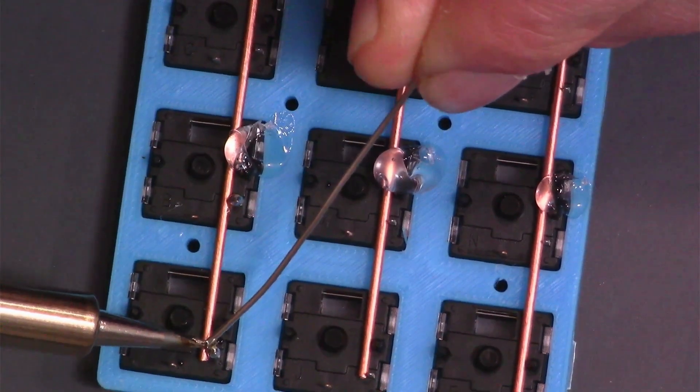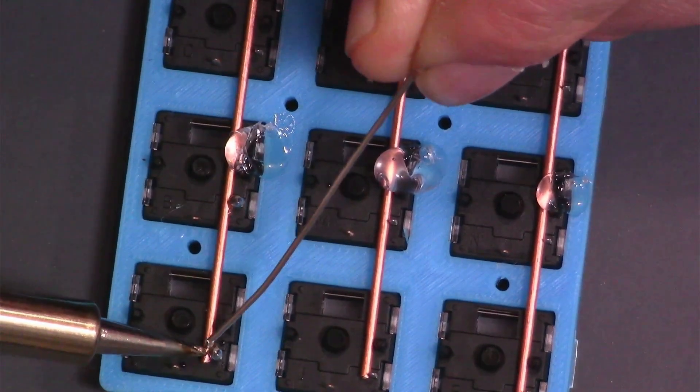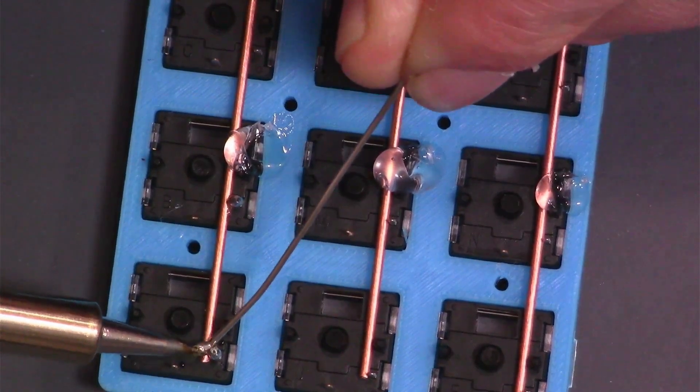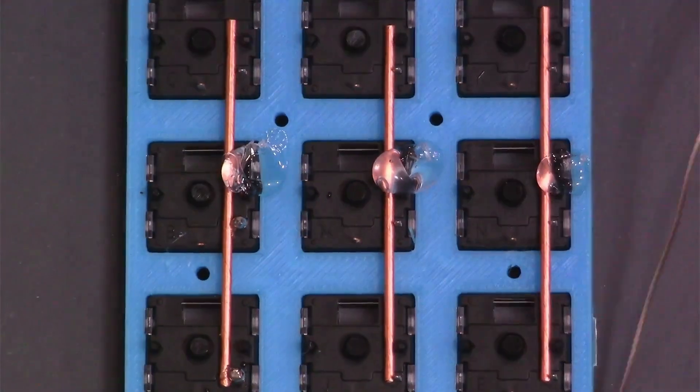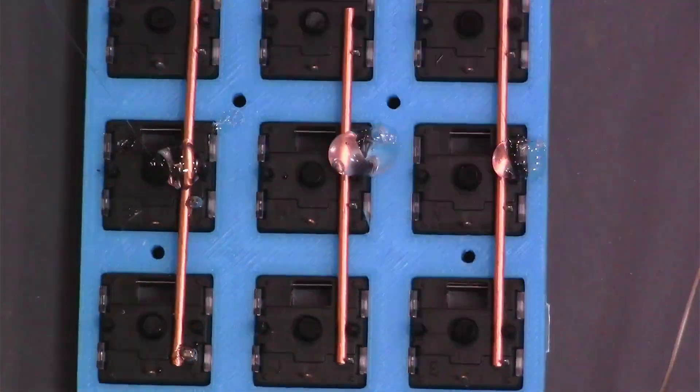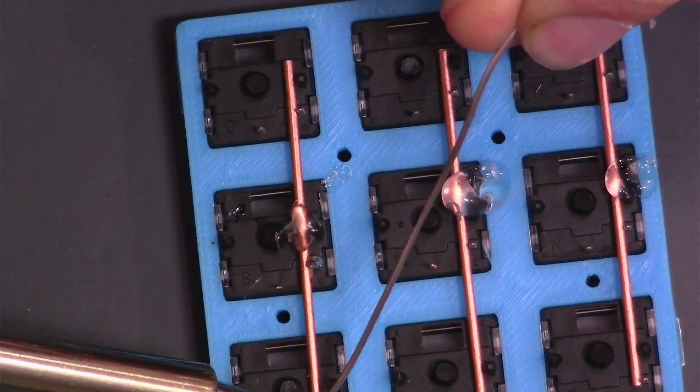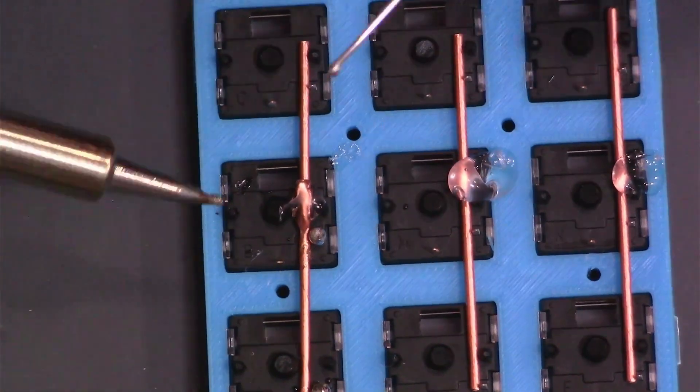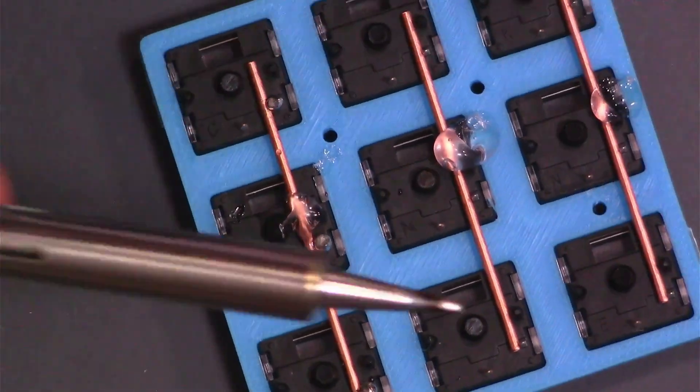I solder all of the row pins together and do a pretty mediocre job. This is my first time soldering. My first round of hot glue blobs didn't really hold, so throughout this video you can see me adding more hot glue and moving things around.